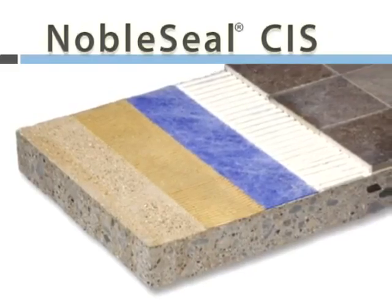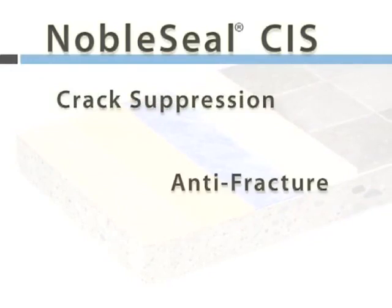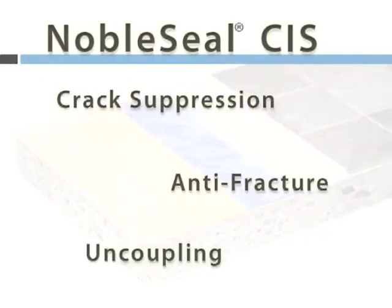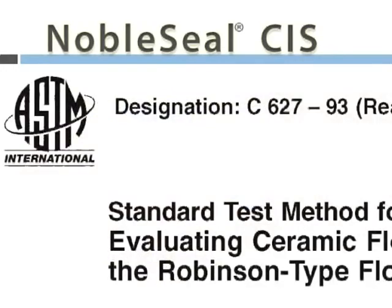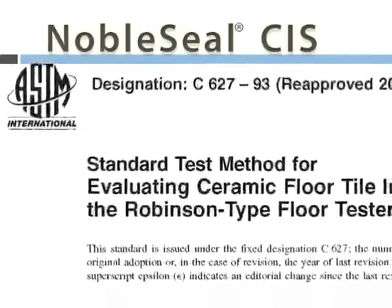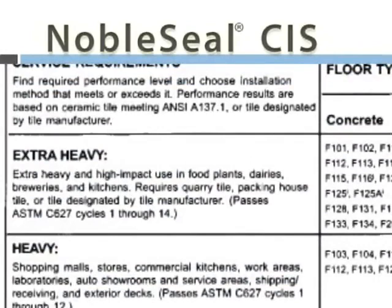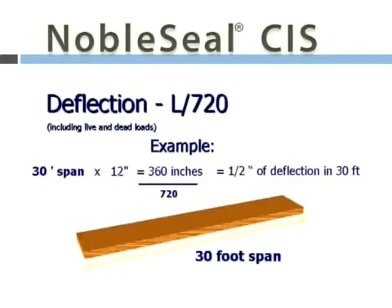Noble Seal is not the only crack isolation membrane — terms like crack suppression, anti-fracture, and uncoupling membranes are used to describe products. There are some test data that should be considered when comparing products. ASTM C627, called the Robinson Floor Test, is actually a tile service rating that provides a rating system of five levels from residential to extra heavy. While not really a measure of substrate movement, it does provide information about the effect of compressibility of a component in the system.